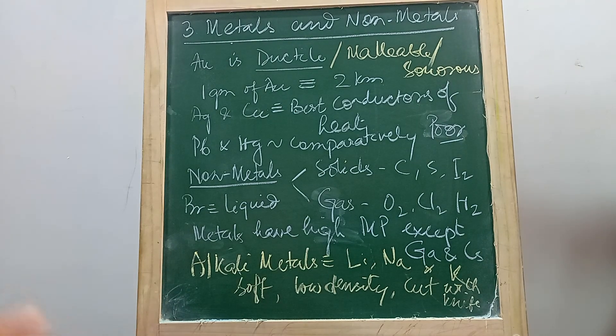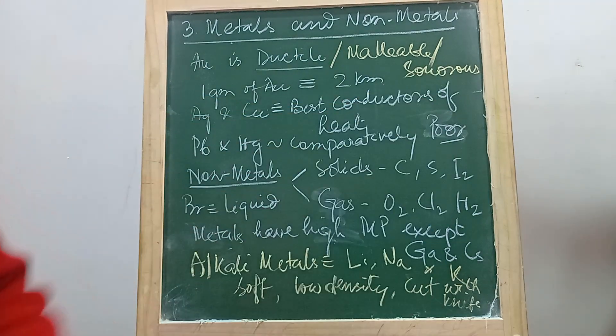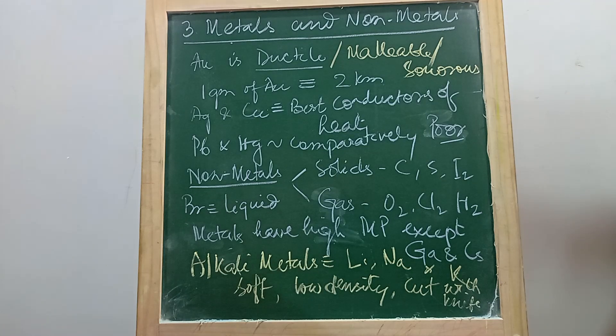Metals are malleable, that means they can be hammered and made in thin sheets. They won't break unlike non-metals which are brittle. Metals are ductile, they are malleable and they are sonorous, that means they make sound. That's why they are used in making school bells.